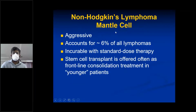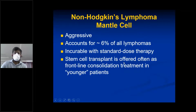Mantle cell lymphoma is an aggressive lymphoma accounting for 6% of all lymphomas. It is incurable with standard-dose therapy. Stem cell transplant is often offered as frontline consolidation treatment in younger patients. In older patients, the morbidity associated with prolonged drug use makes stem cell transplant less favorable.